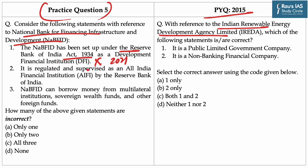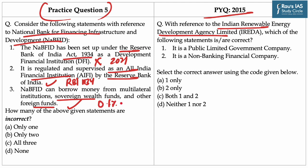Statement 2: It is regulated and supervised as an all-India financing institution by the Reserve Bank of India. This statement is correct because as per the RBI Act of 1934, RBI regulates all-India financial institutions and NaBFID is the fifth such institution — the first four being Exim Bank, NABARD, National Housing Bank and SIDBI. Statement 3: NaBFID can borrow money from multilateral institutions, sovereign wealth funds and other foreign funds. This statement is correct because NaBFID raises funds from multiple sources such as the Central Government, Reserve Bank of India, Scheduled Commercial Banks, Mutual Funds and Multilateral Institutions. NaBFID provides a sovereign guarantee at a concessional rate of 0.1% for borrowing from multilateral institutions, sovereign wealth funds and other foreign funds.